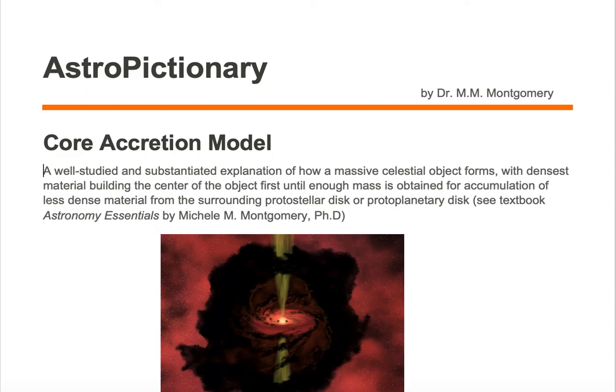The core accretion model is a well-studied and substantiated explanation of how a massive celestial object forms, with the densest material building the center of the object first until enough mass is obtained for accumulation of less dense material from the surrounding protostellar disk or protoplanetary disk.